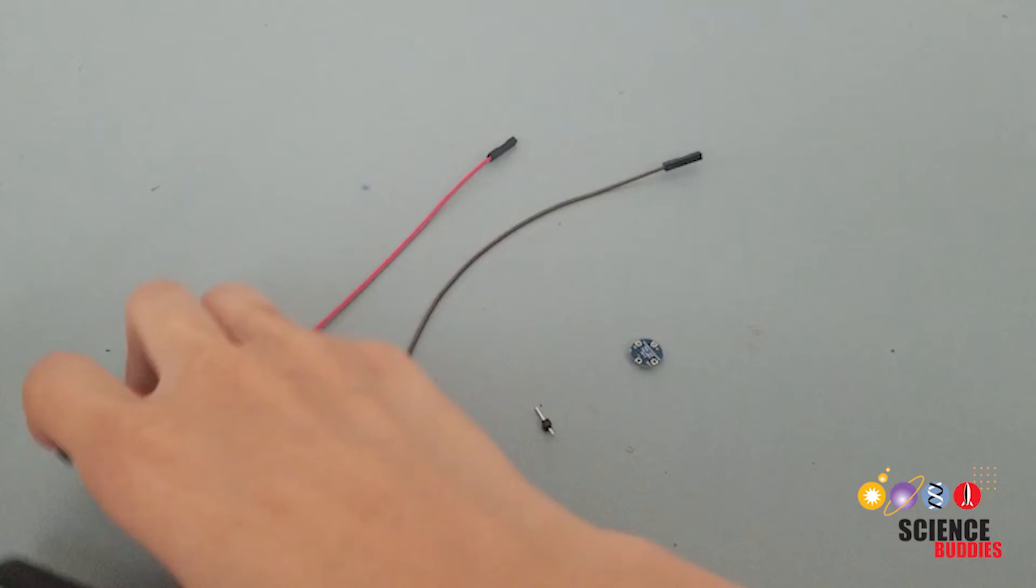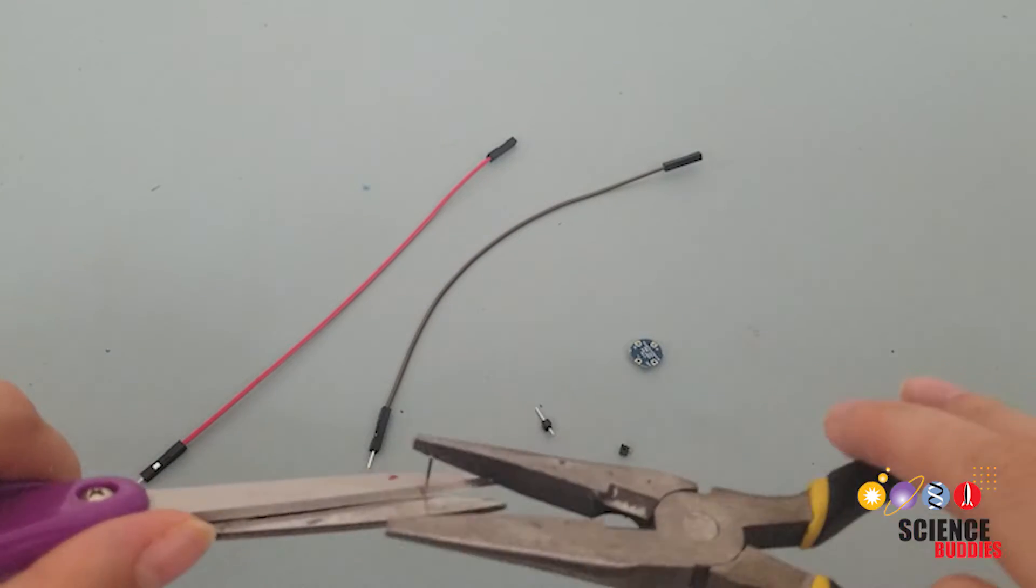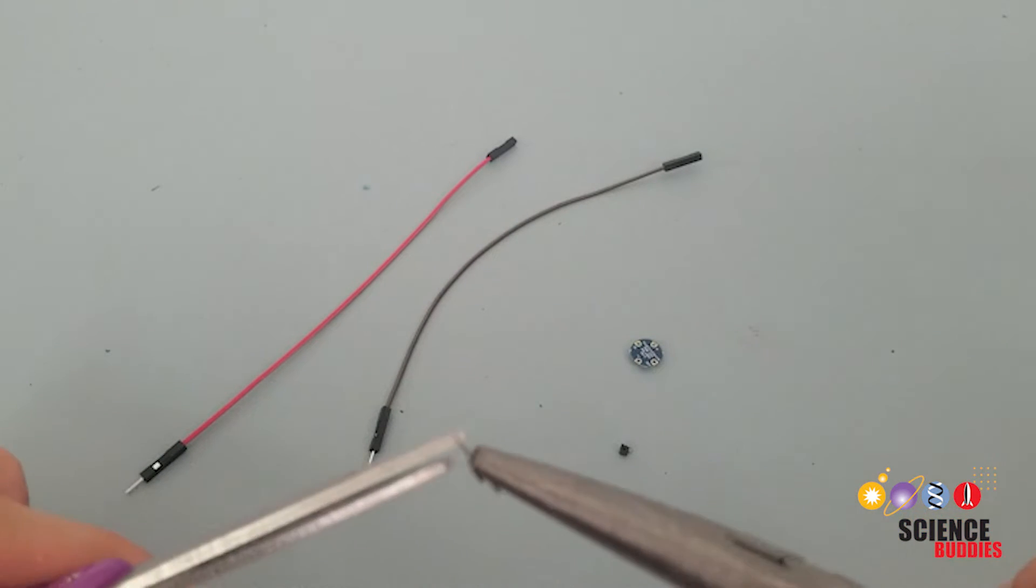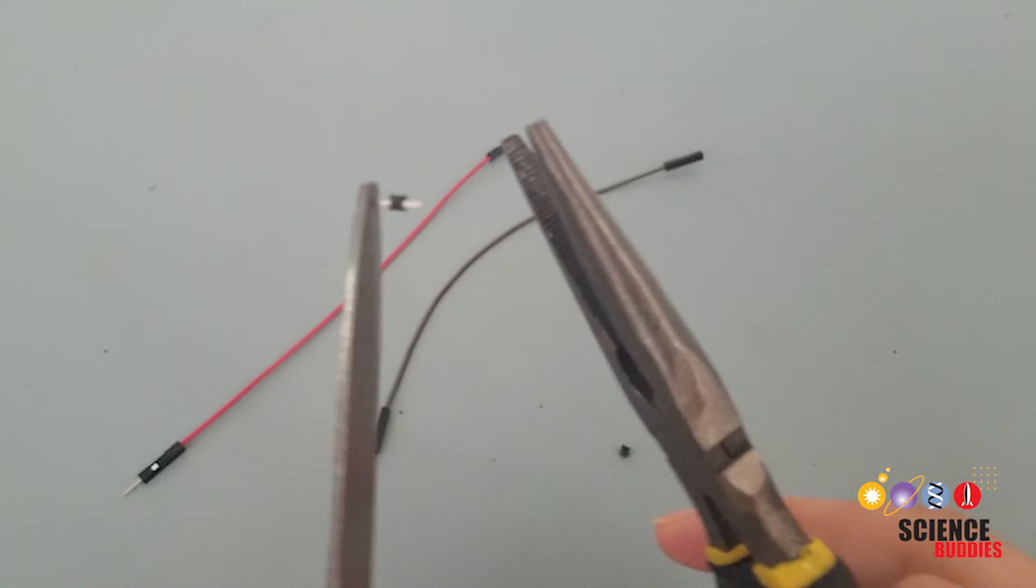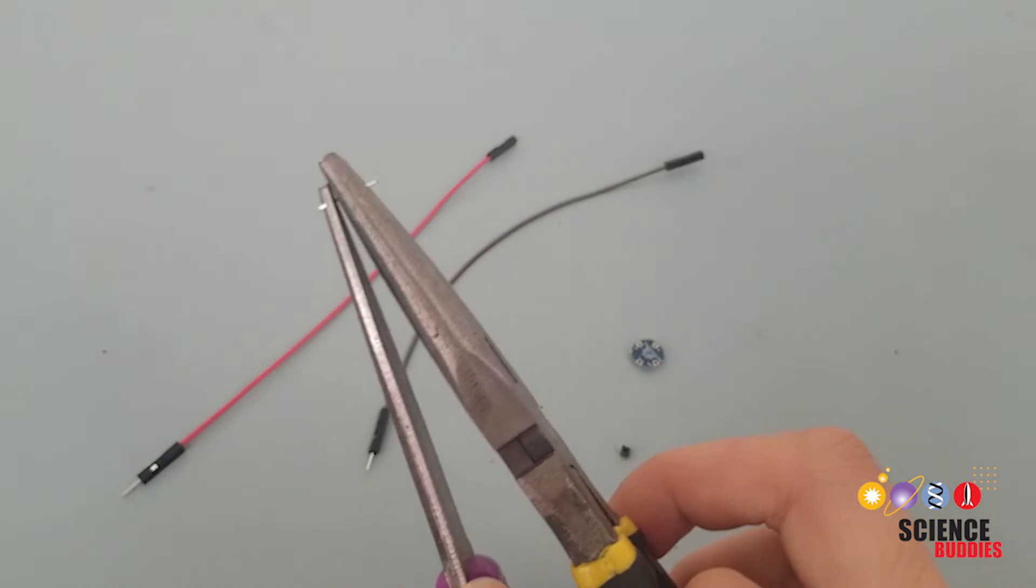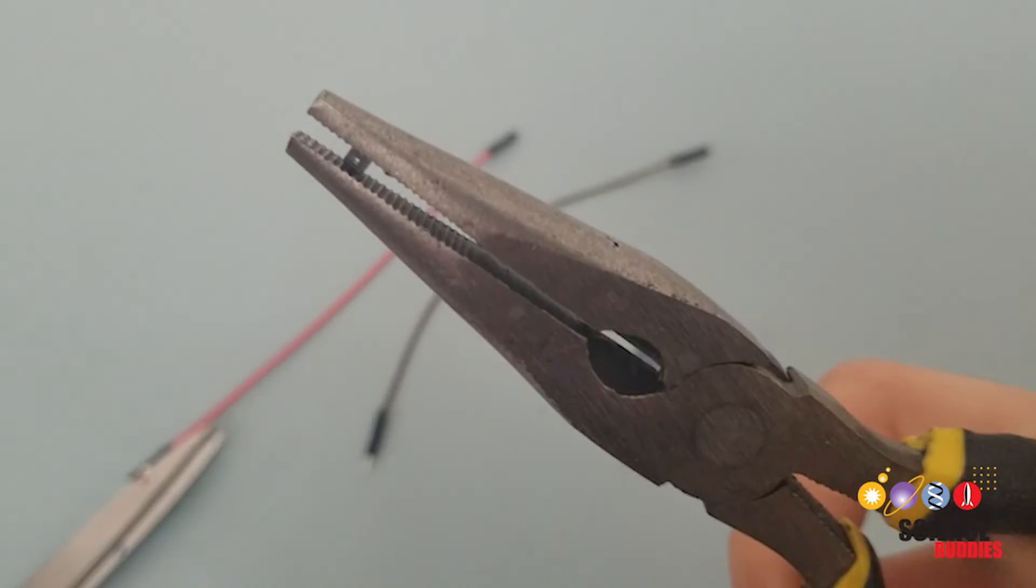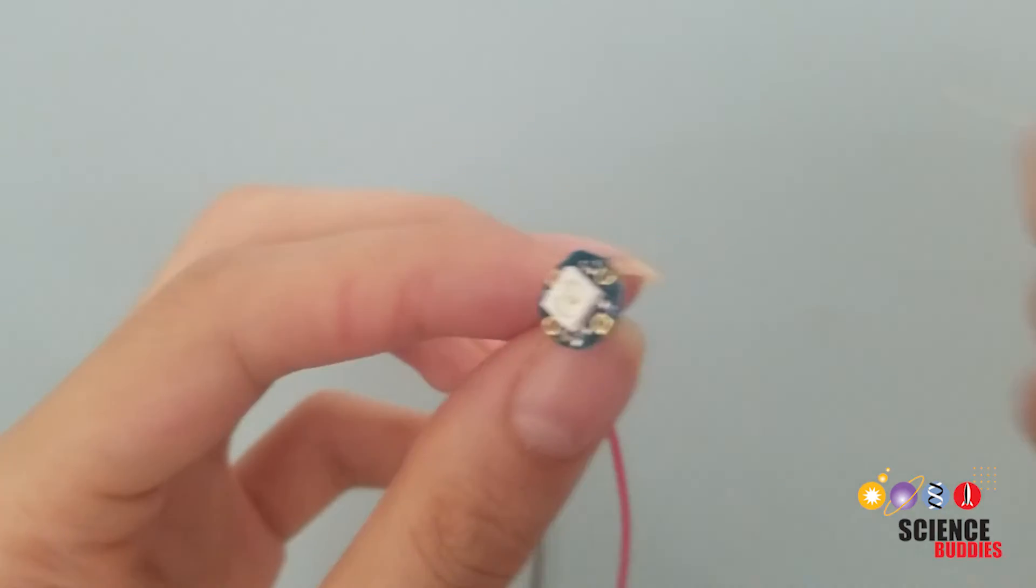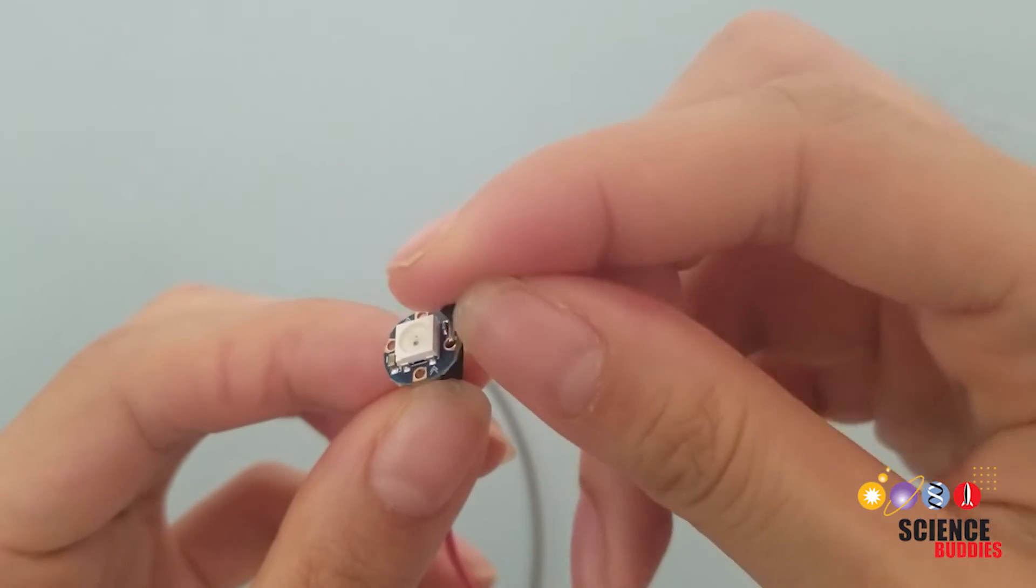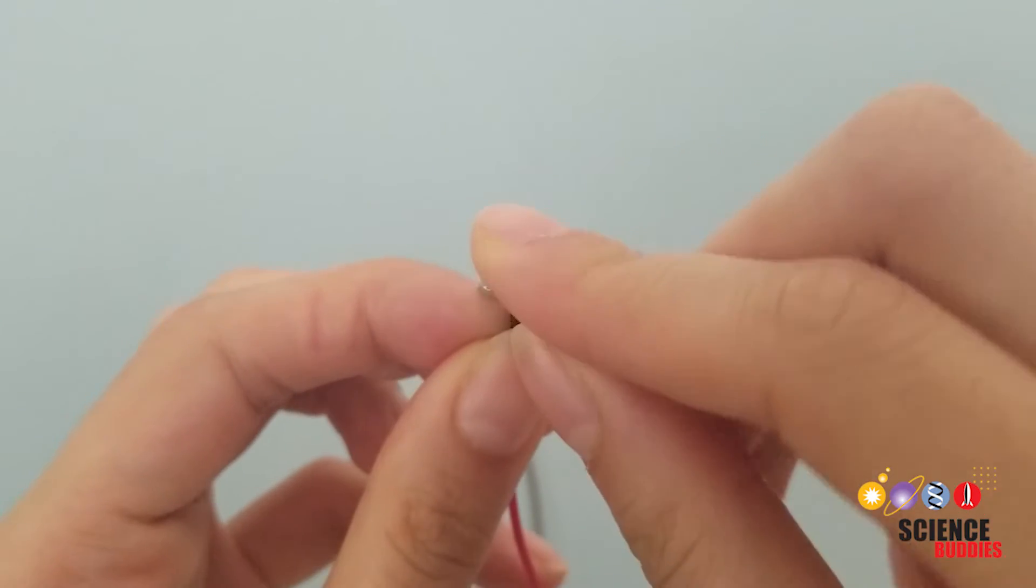You will need two of your male headers and a pair of scissors. Remove the metal pins from the plastic by pinching the black pieces between your fingers and pulling the metal piece with your scissors. You can also use needle nose pliers like I did here. You should be left with these small black pieces with holes. This plastic part is exactly what you need.